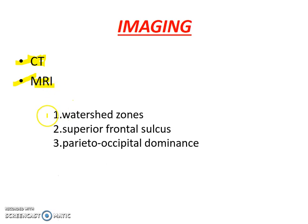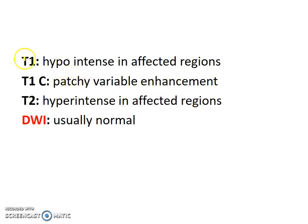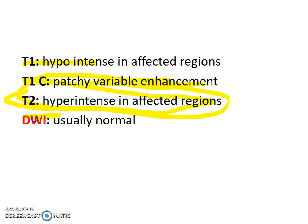Coming to the diagnosis, it is basically based on imaging. CT and MRI are the modalities. CT will show nonspecific hypodense lesions, which are very difficult to differentiate from other conditions, so I will discuss only MRI. The common areas involved on MRI are the parieto-occipital region and the superior frontal sulcus. Usually both lobes are involved and the findings are not restricted to any single vascular territory — this is how you differentiate PRES from other vascular events. In T1 you get hypointense lesions; with contrast there is variable enhancement. In T2, you get hyperintensities. Diffusion-weighted MRI is usually normal.